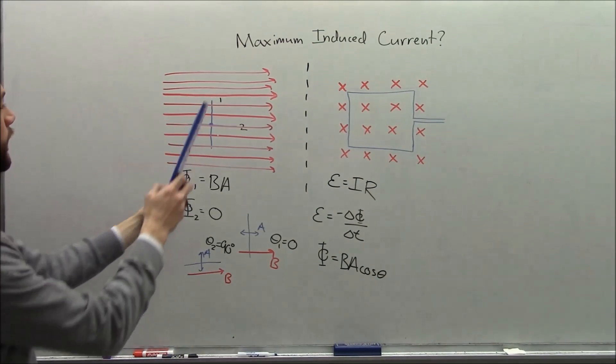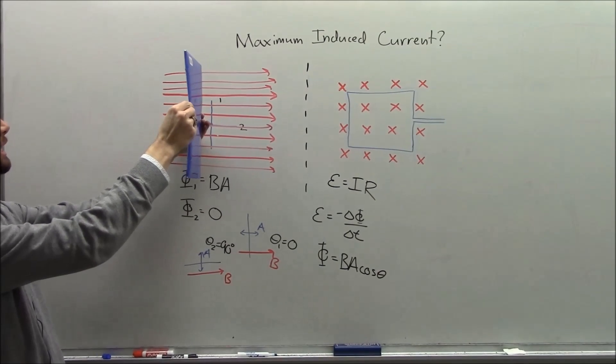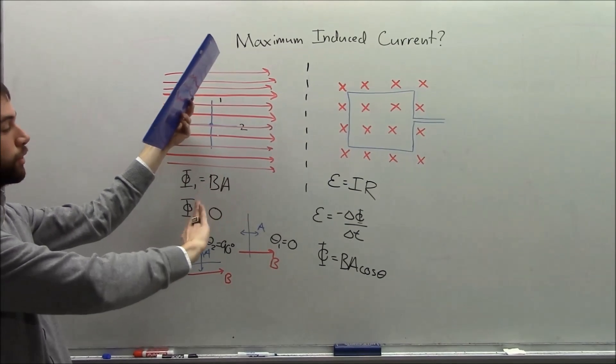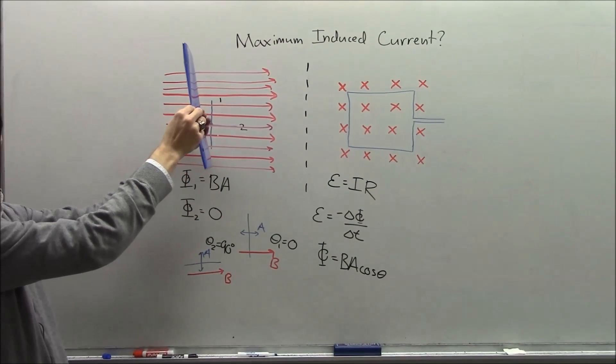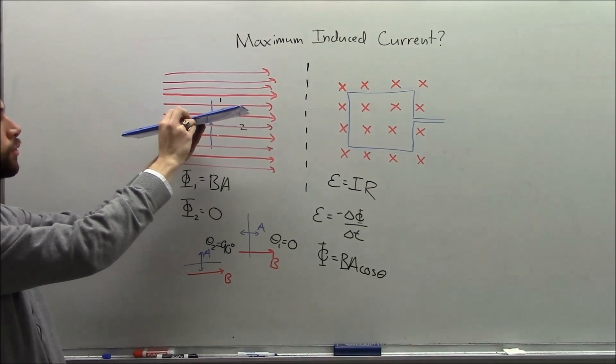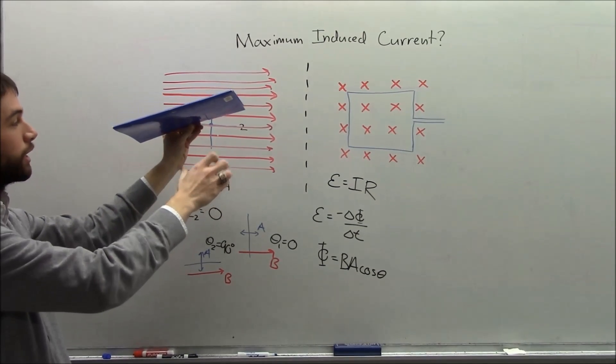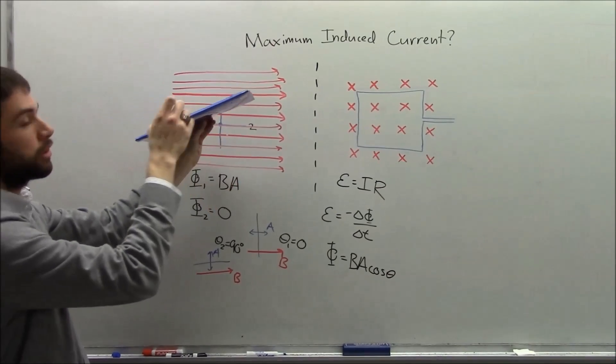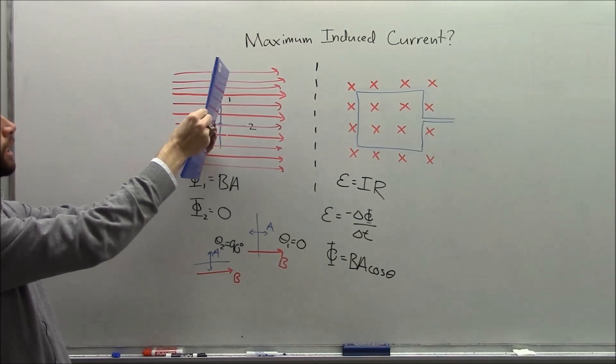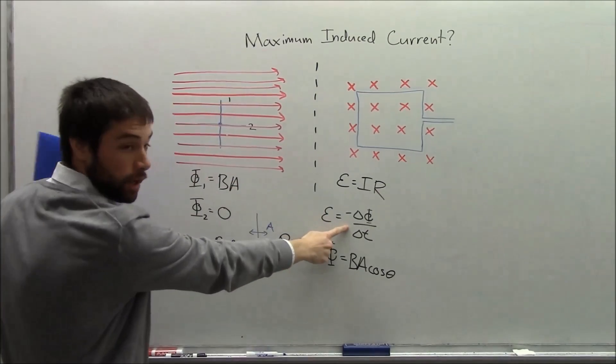So in conclusion, as the loop rotates around here, in position one, the same amount of rotation doesn't add or subtract that many arrows that are poking through this loop, so the flux doesn't change that much. But as it rotates through position two, the same amount of change in the angle, the same rate of change, causes a much larger increase in the number of arrows that go through. So as the loop rotates around, as it passes through point two, it has the greatest change in flux.